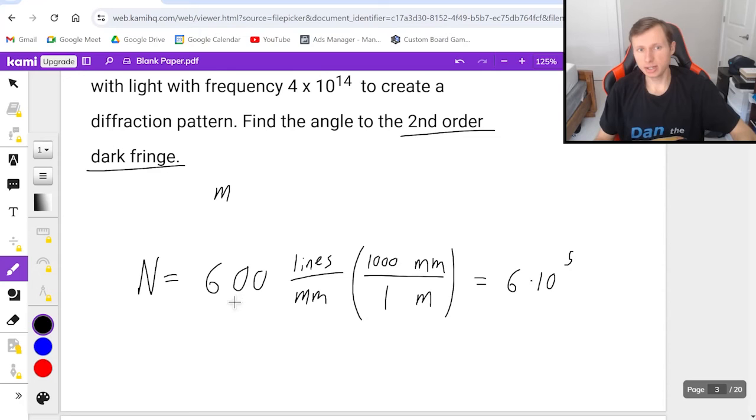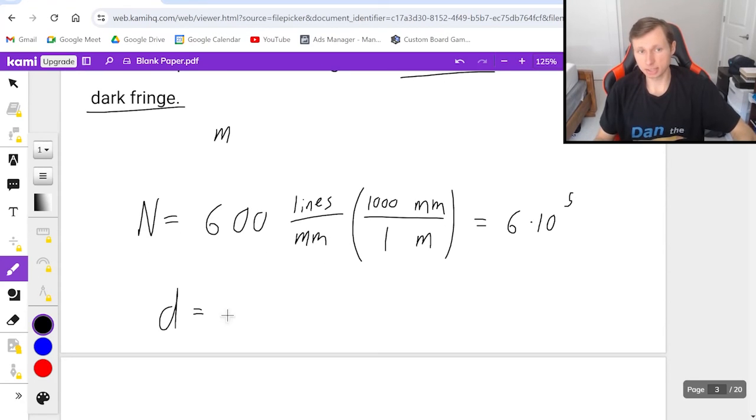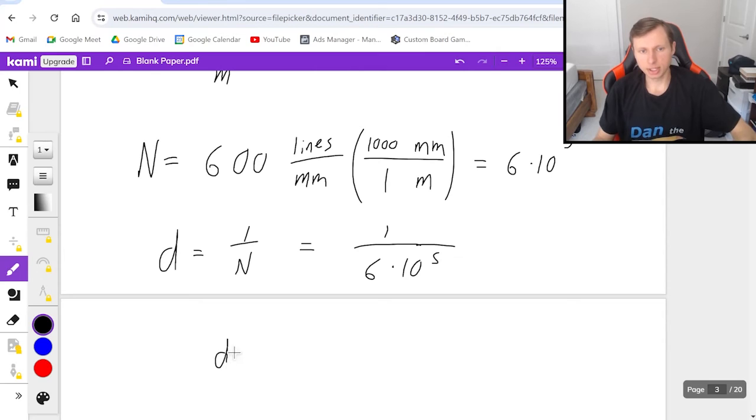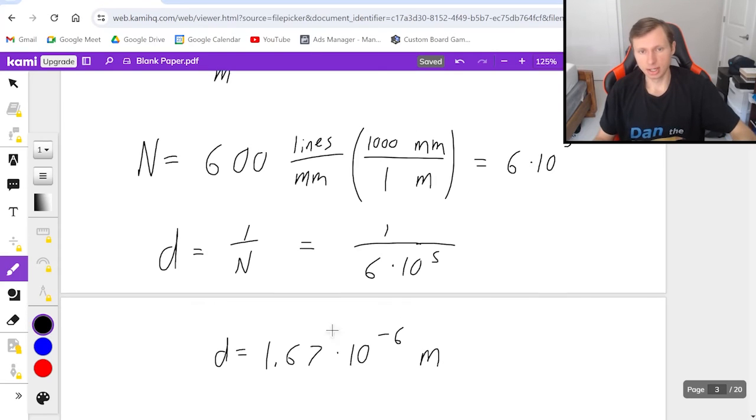The next thing, I should probably find d, the distance between the slits, which is just 1 over n. So 1 over 6 times 10 to the fifth power, that's going to be 1.67 times 10 to the minus sixth, and that's in meters.